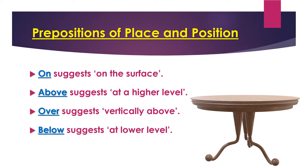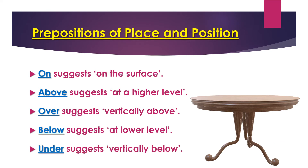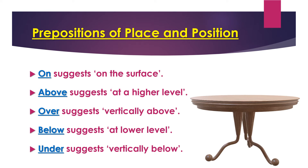'Below' suggests at a lower level — it can be anywhere. The cup is below the table; left or right does not matter. 'Under' suggests vertically below — right below it. The football is right below the table, so it is under the table. We often get confused with these prepositions, so please try to understand what they actually mean.